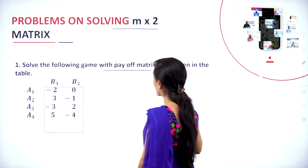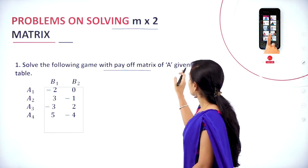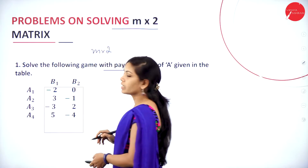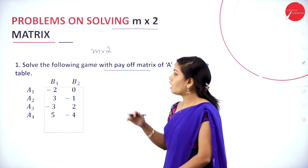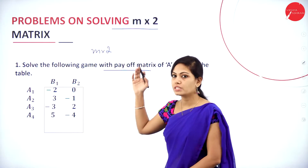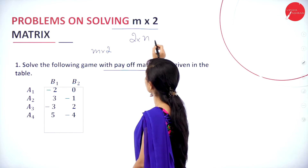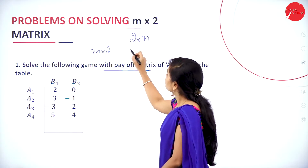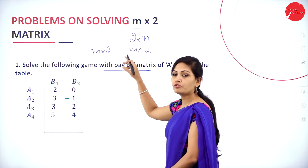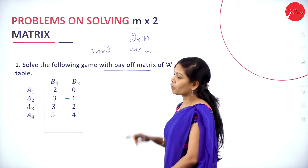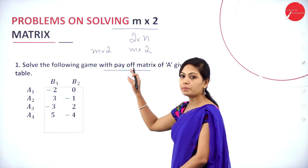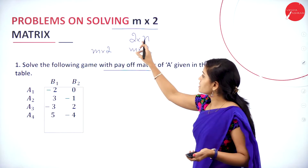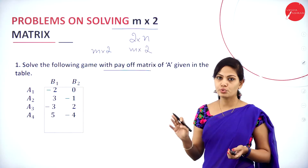Solve the following game with the payoff matrix of player A given in the table. Here we have m×2 games. How do we identify it as m×2? For 2×n games you get 2 rows and n columns; for m×2 games you get m rows and 2 columns. It is a very simple concept — 2×n games and m×2 games.